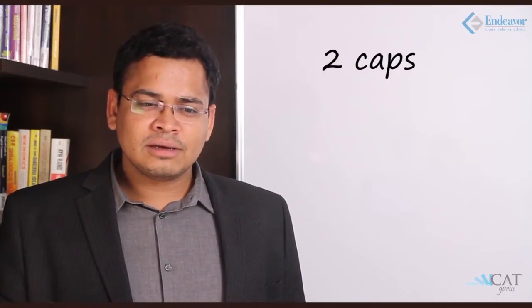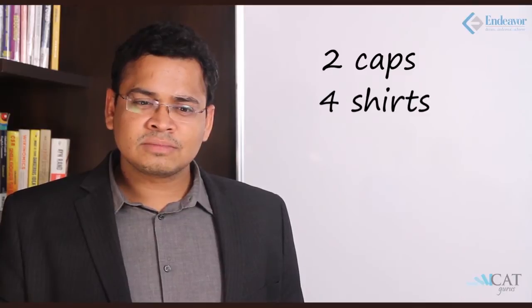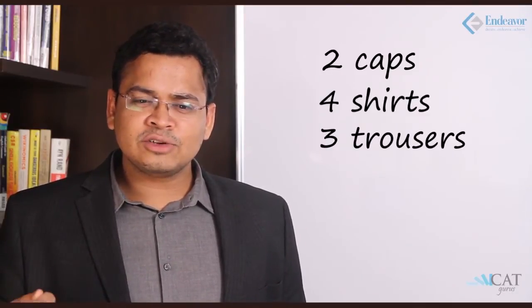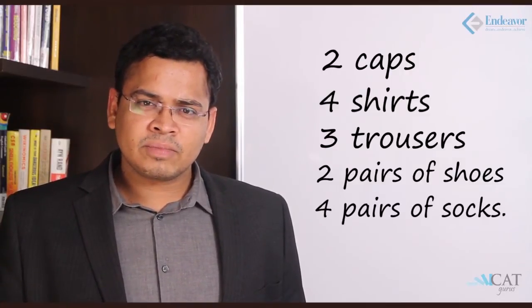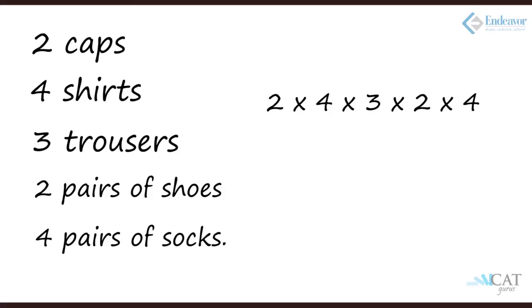Looking at another problem — we can generalize this also using the word AND. Say for example, I have two caps, four shirts, three trousers, two pairs of shoes, four pairs of socks. If I have to wear one of each, I have to wear one cap AND one shirt AND one pair of trousers AND one pair of socks AND one pair of shoes. That means it is two into four into three into two into four.